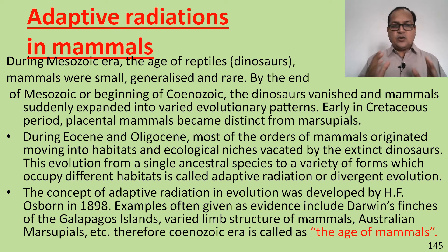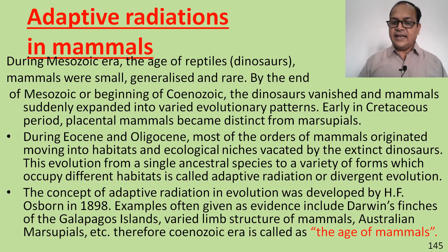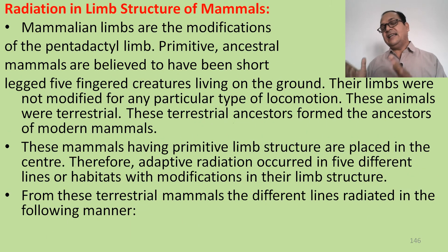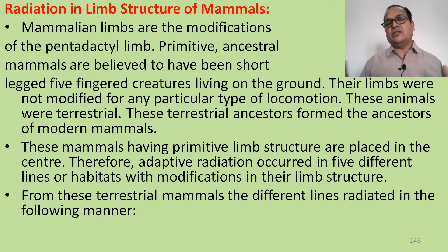The concept was given by Osborn, and the examples are found in the Cenozoic era. The Cenozoic era is also called the age of mammals, and radiation is seen in the limb structure of mammals.